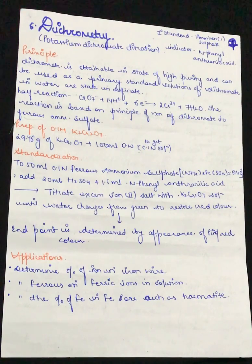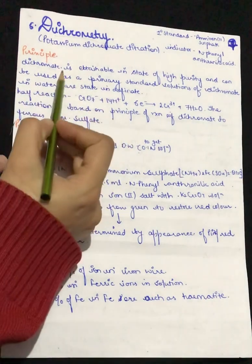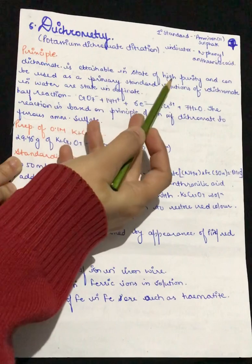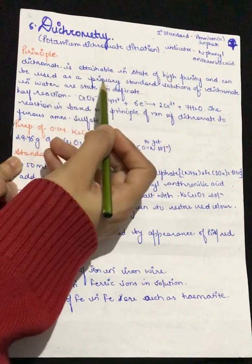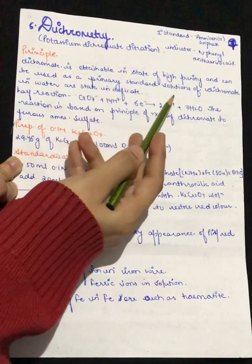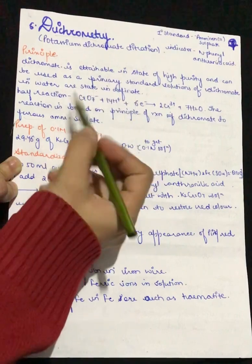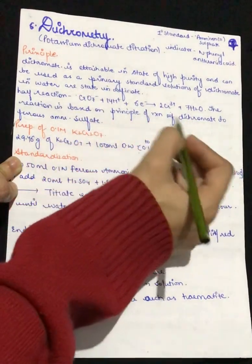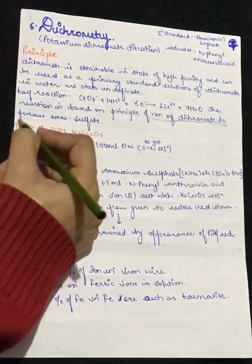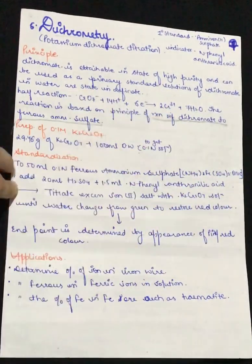The principle involves dichromate which is obtainable in the state of high purity and can be used as primary standard solution of dichromate in water. The reaction is based on the principle of reaction of dichromate to ferrous ammonium sulfate.